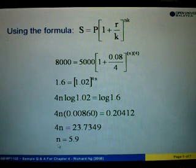So from here, n will be equal to 23.7349 divided by 4 or 5.9 years. Or we can change this to 5 years and 11 months actually.